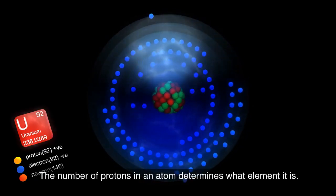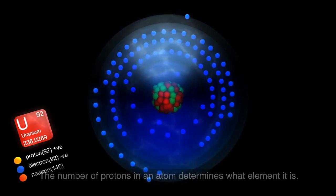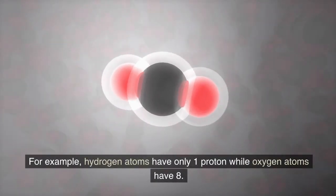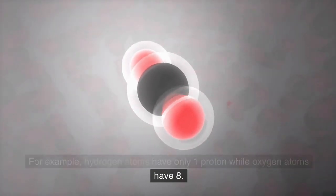The number of protons in an atom determines what element it is. For example, hydrogen atoms have only one proton while oxygen atoms have eight.